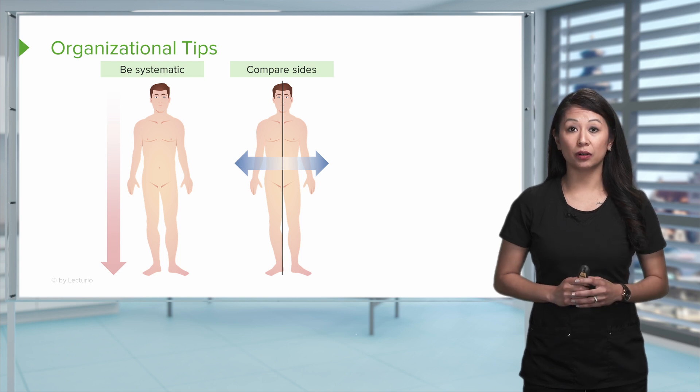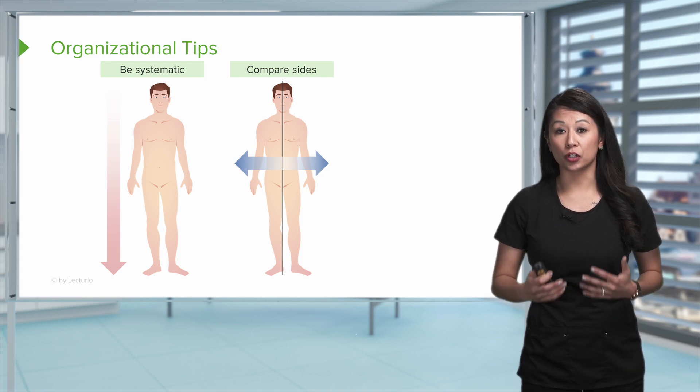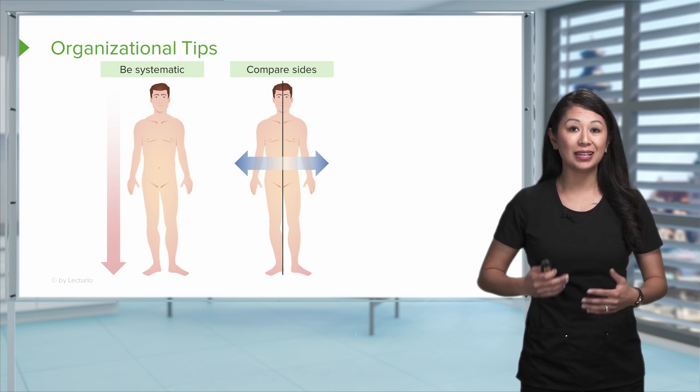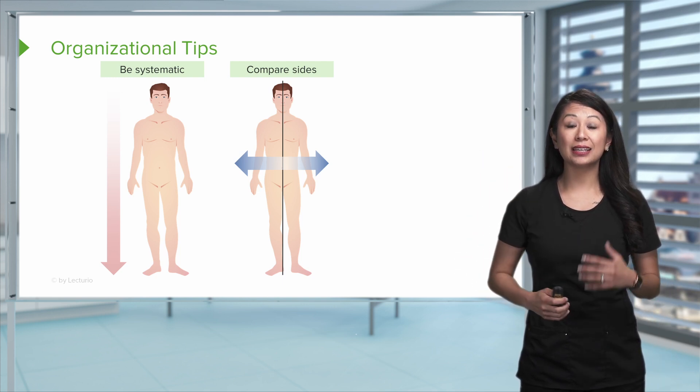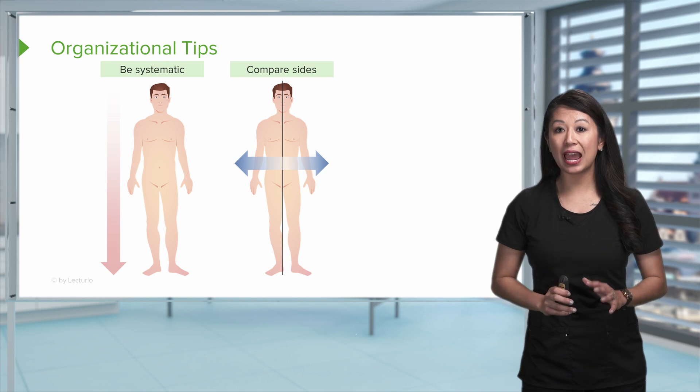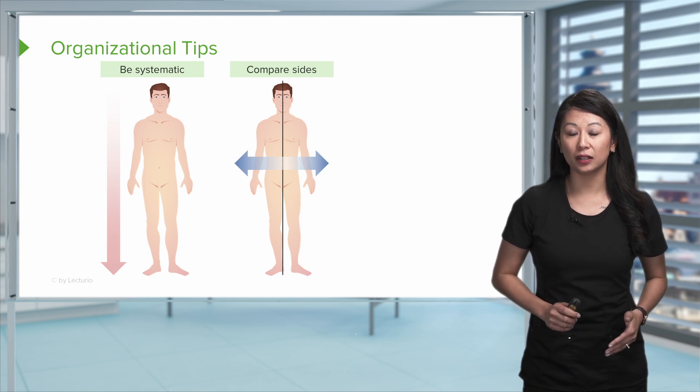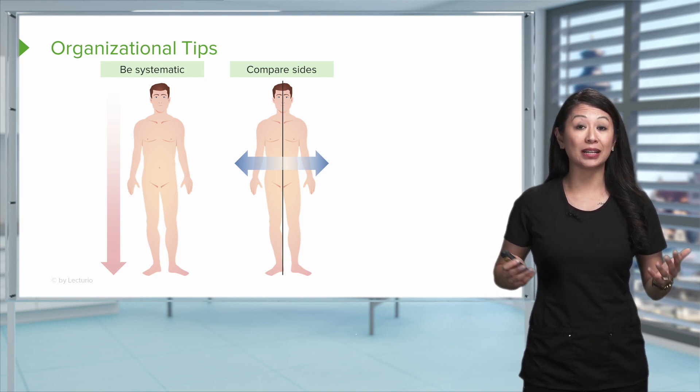Now here's another really important time that this comes into play. Stroke patients in particular. A lot of the times I used to work on a stroke floor, and as you can imagine, depending on the side of the brain that's damaged, the opposite side can be affected. So you may have weakness on one side of the body. Again, this is where comparing sides is important.